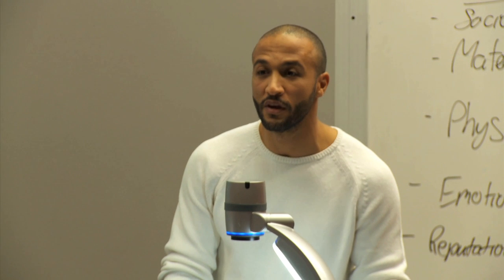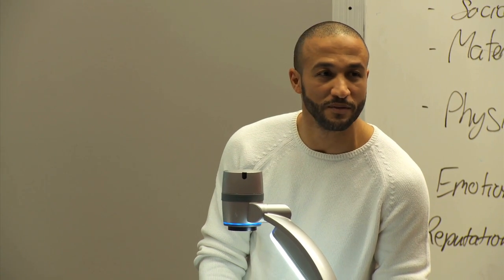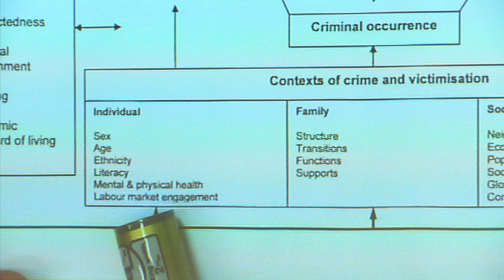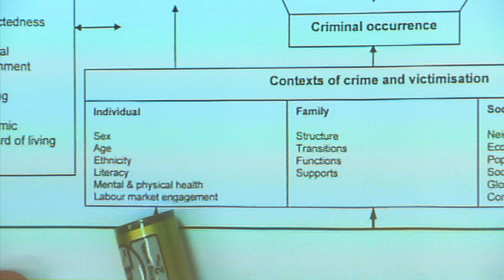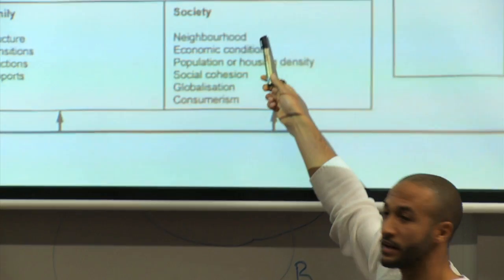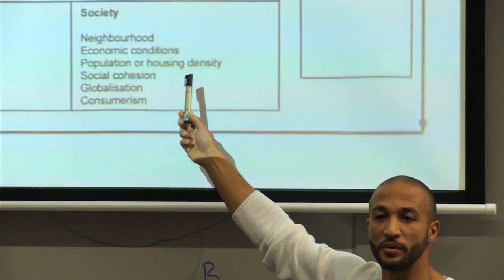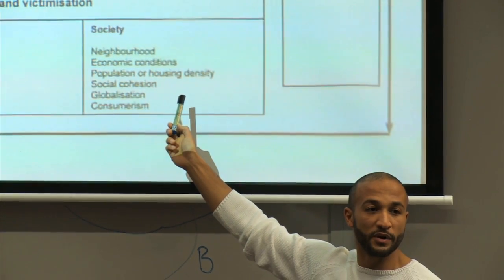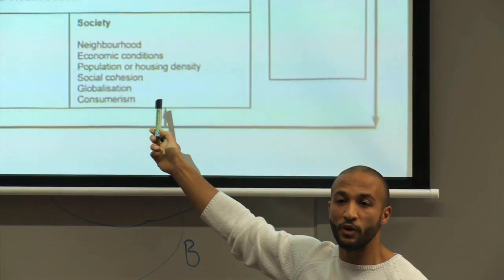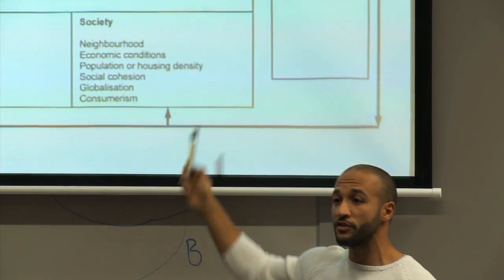This is from a report put out by the Ministry of Justice. In understanding criminal occurrence, you cannot simply look to the crime itself. You have to look to the context of crime and victimization. We have to look at the individual — sex, age, ethnicity, literacy, mental and physical health, and labor market engagement. Does this person have a job? Does this person have the potential of getting a job? Does this person have an education? Can this person read? Then we look to family — what kind of support do they enjoy? And then we look at society: what neighborhood have they grown up in? If you grew up in Mangere, chances are you had a very different childhood from growing up in Kohimarama. Is that going to influence your outlook on life? Yes, inevitably it is. And the Ministry of Justice recognizes this.